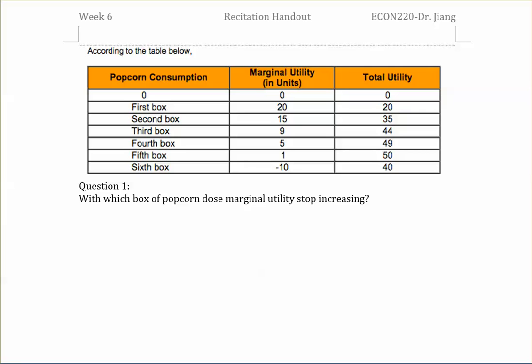The first question is based on the table below, which is about the popcorn consumption. The question asks: in which box of popcorn does marginal utility stop increasing? So what we need to look at is the second column — the marginal utility.